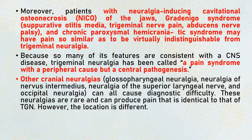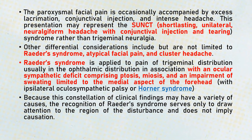Other cranial neuralgias like glossopharyngeal neuralgia, neuralgia of the nervus intermedius, neuralgia of the superior laryngeal nerve, and occipital neuralgia can also present with pain identical to trigeminal neuralgia, though the location may be different. Short-lasting unilateral neuralgiform headache with conjunctival injection and tearing (SUNCT) can also present with equivalent pain, but there will be excessive lacrimation, conjunctival injection, and intense headache in these patients.